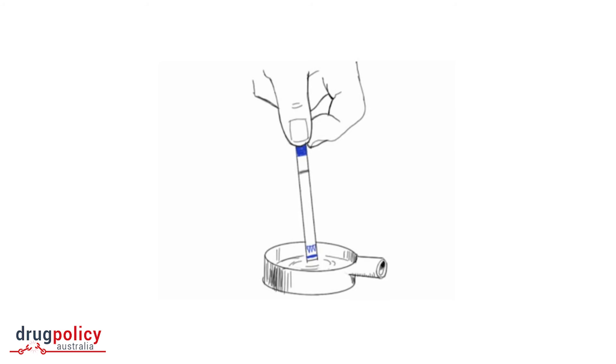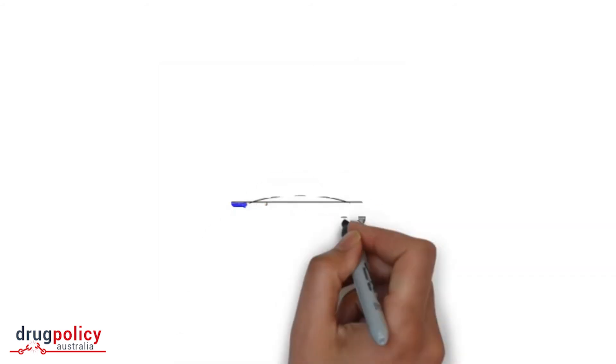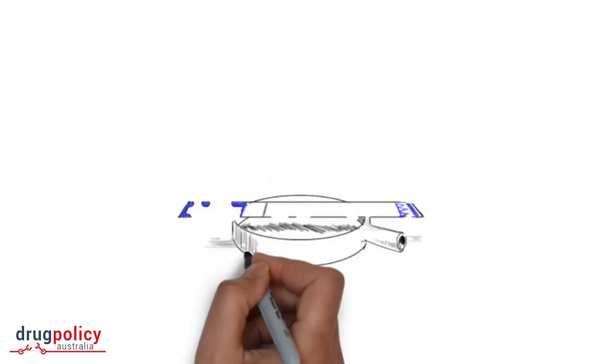Afterwards, lay it across the top of the cooker and wait for the results to appear. They happen pretty fast, usually in less than 30 seconds.